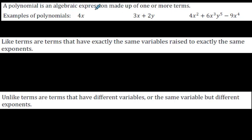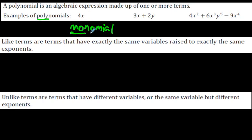A polynomial is an algebraic expression made up of one or more terms. The word poly means many, but even something like 4x is a polynomial — it has a specific name and it is called a monomial. Mono means one. Over here we have two terms — how do we know there's two? Because they're separated by a plus or minus sign. That's called a binomial. Think of a bicycle as having two wheels — a binomial has two terms.